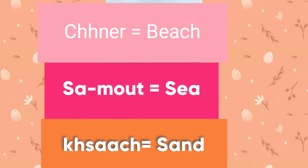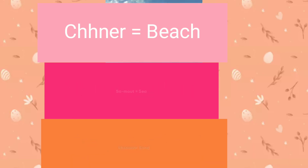Chne is beach, salmon is sea, ksaj is sand. Chne is salmon ksaj.